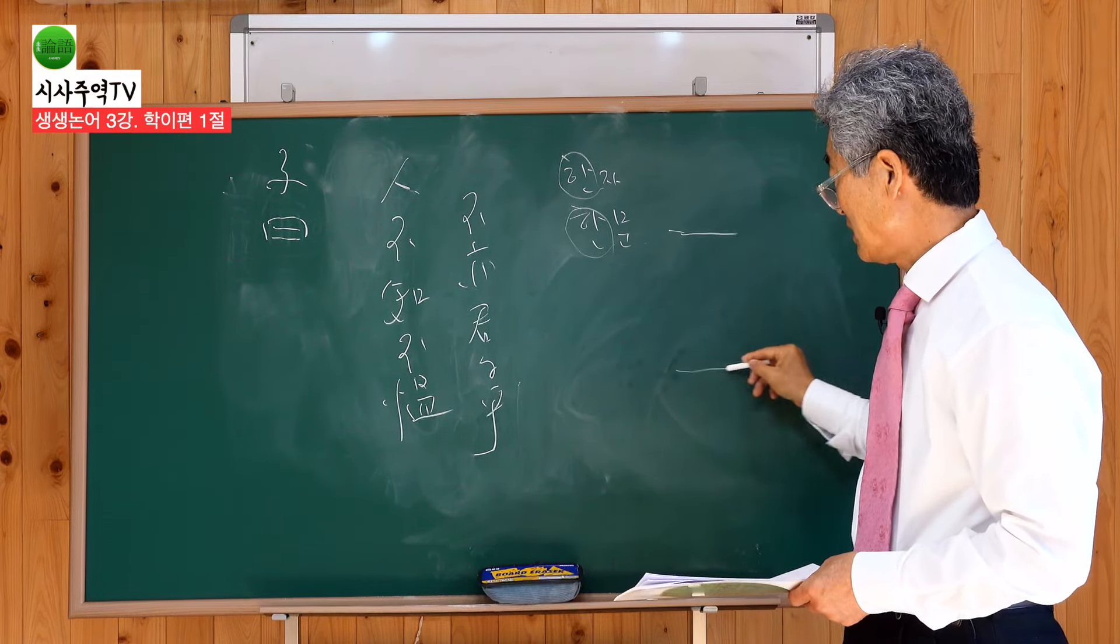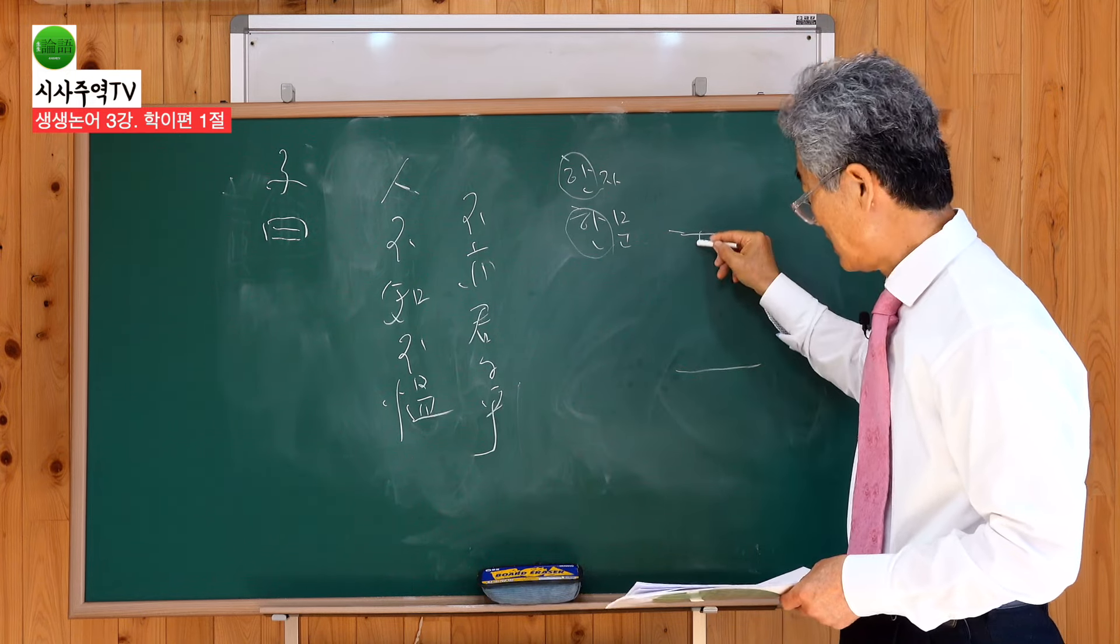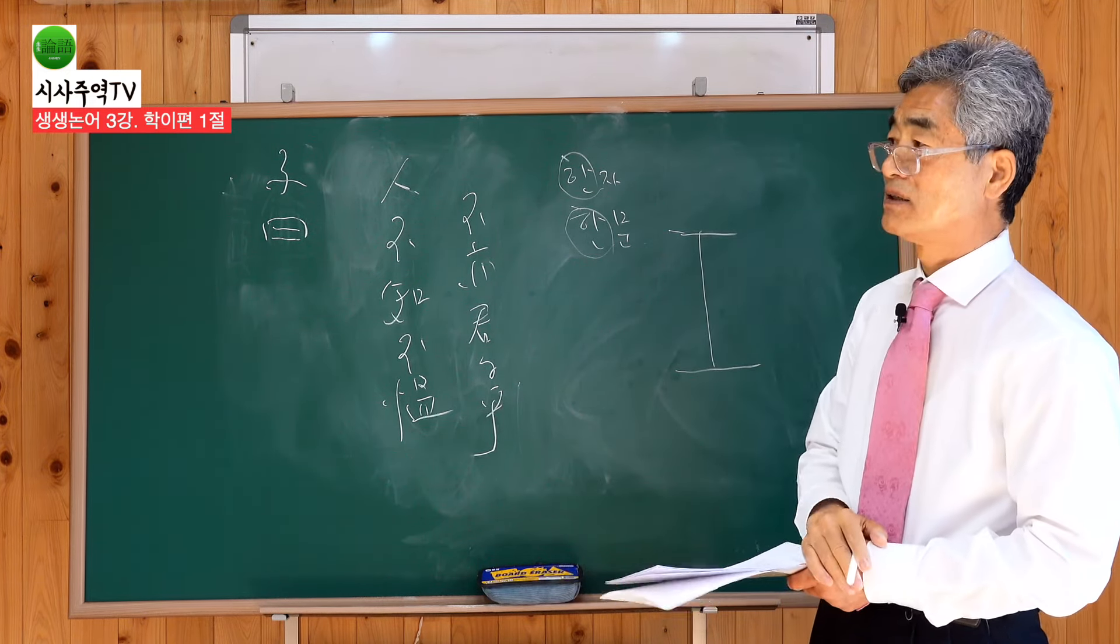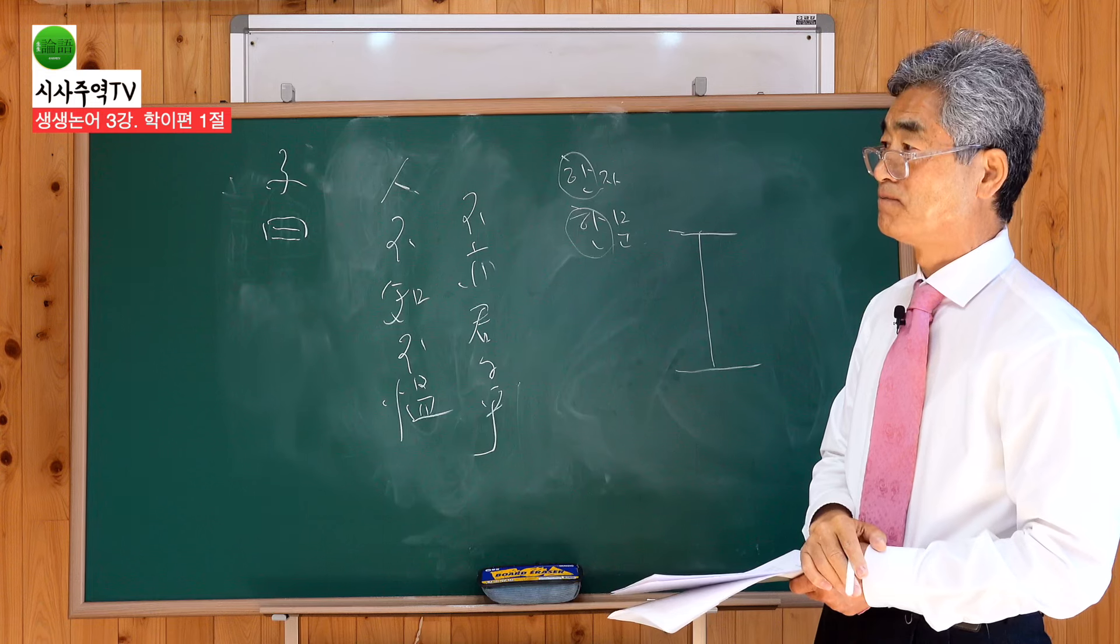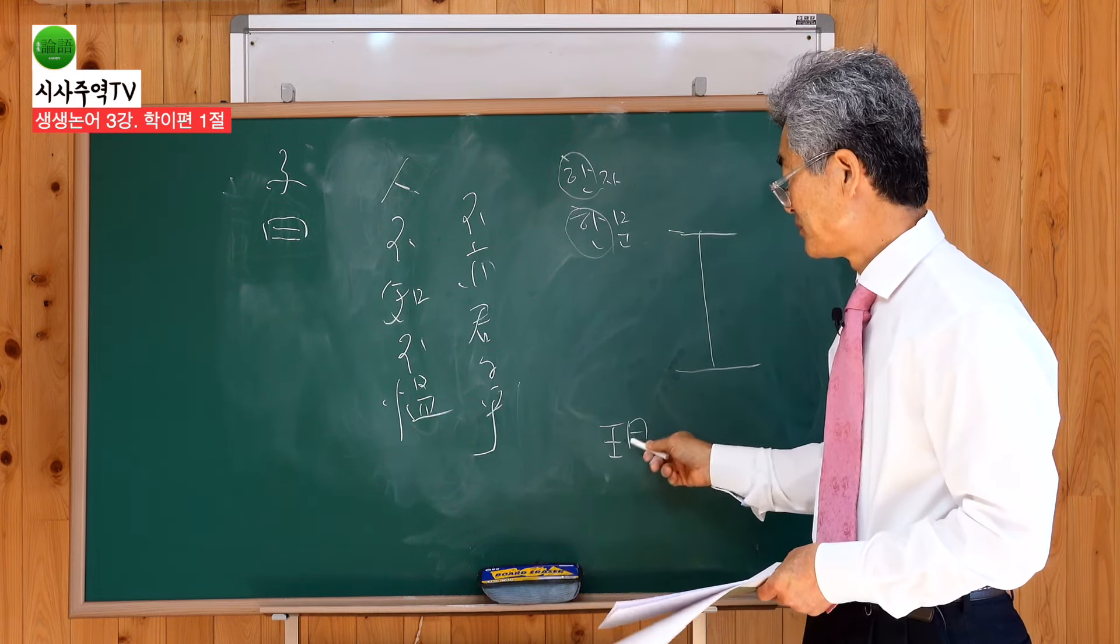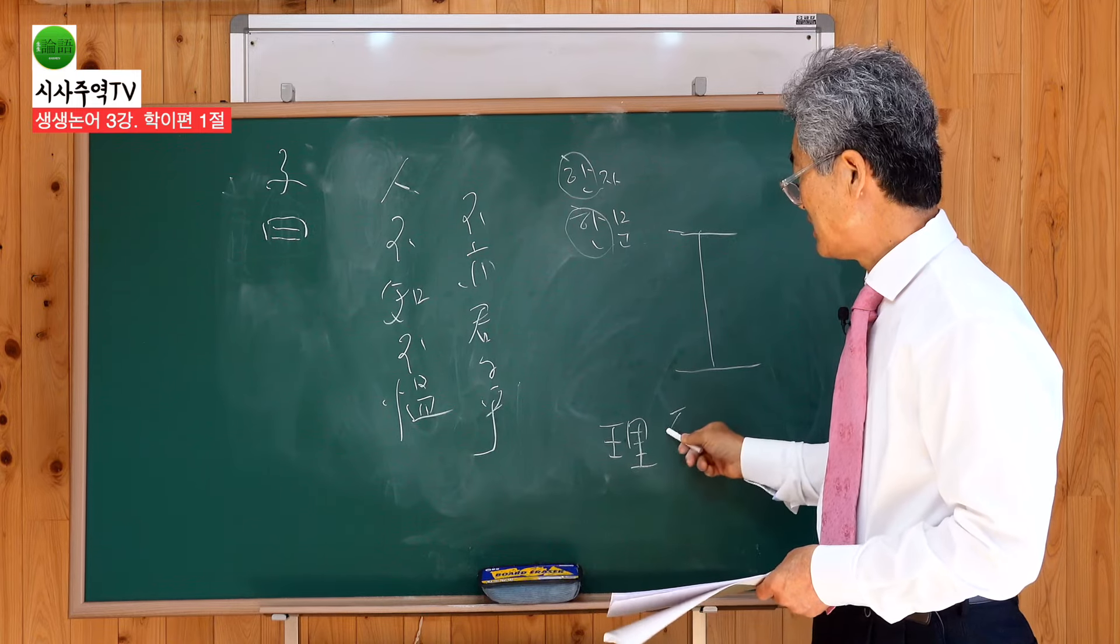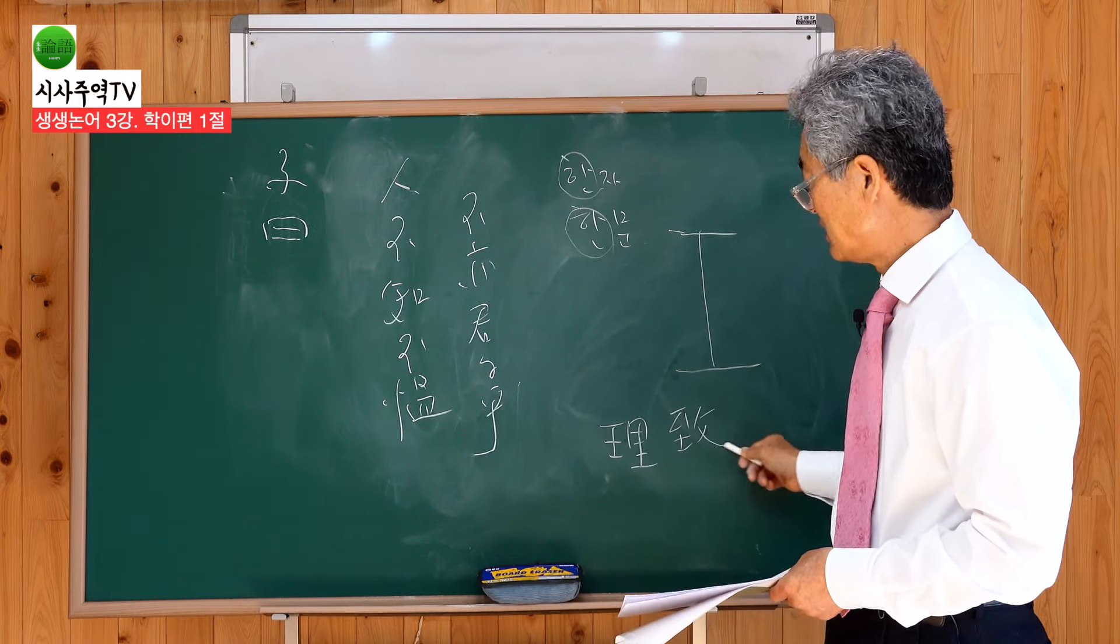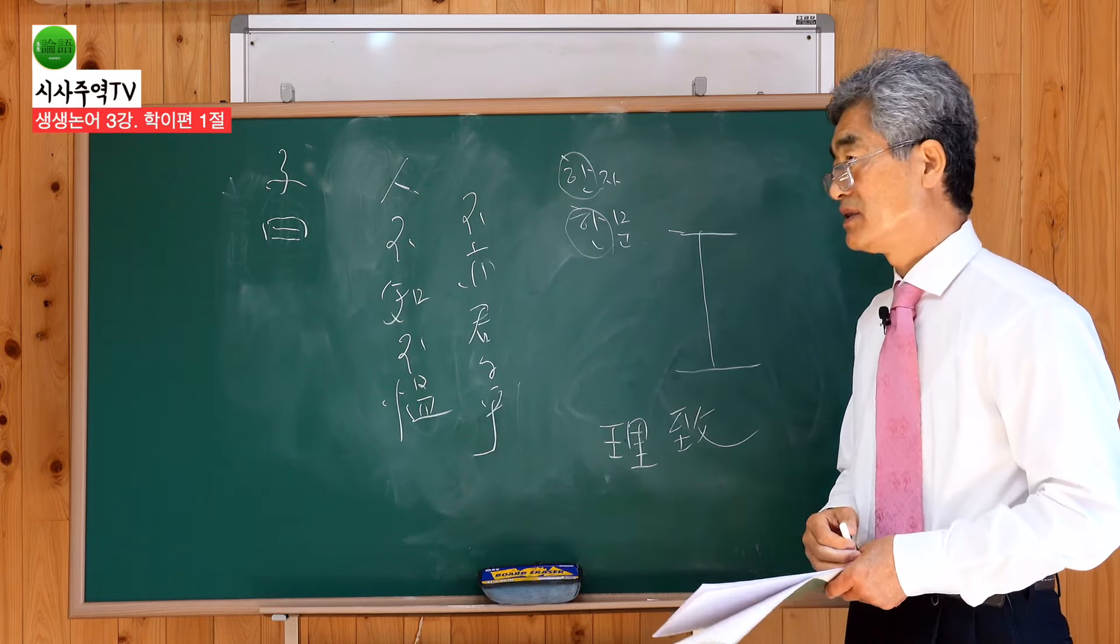이게 뭘까요? 천하늘과 땅의 이치를 알아내는 겁니다. 하늘과 땅 속에 있는 이치. 이치가 뭘까요? 이치 하는 거. 이치 이래 쓰죠. 이치.